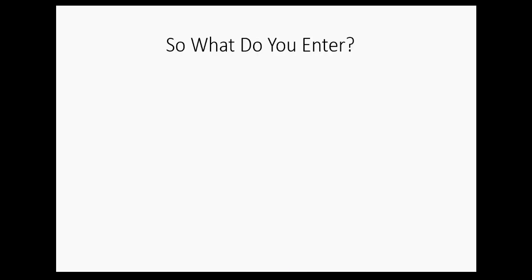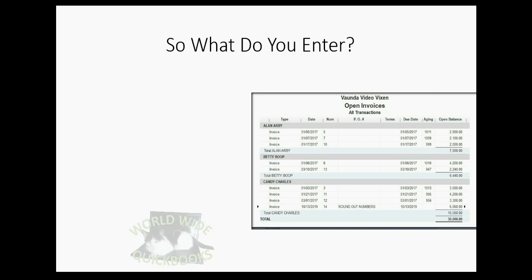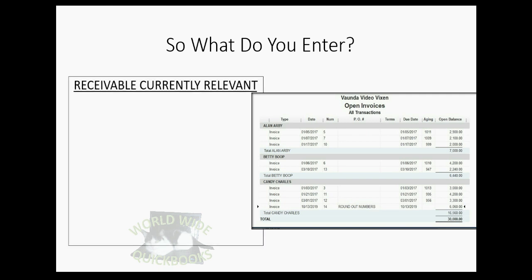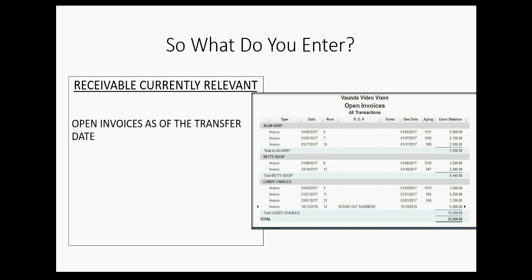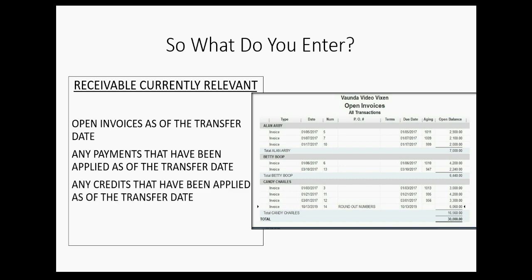So what exactly do you enter? The target is to make the open invoice report look exactly correct for each individual invoice's balance. The way to do that is to record the currently relevant transactions — the invoices, the payments, and the credits — all of which relate only to the transactions listed on the open invoice report.